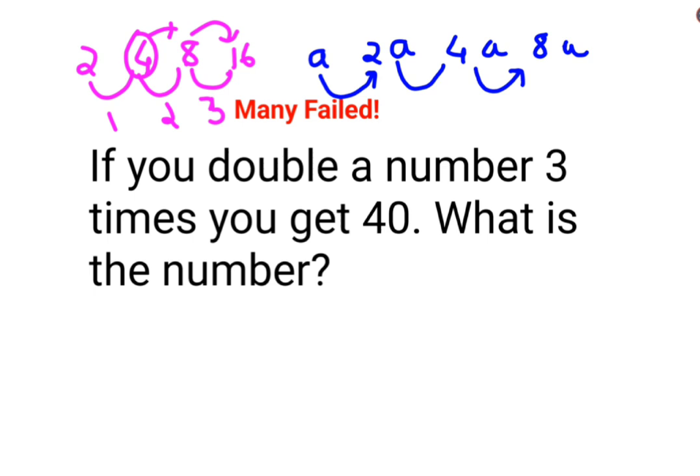So here we can say a number which is doubled 3 times - that is nothing but 8a. Originally the number was a. But now since we doubled it 3 times it became 8a. Now this is equal to 40.